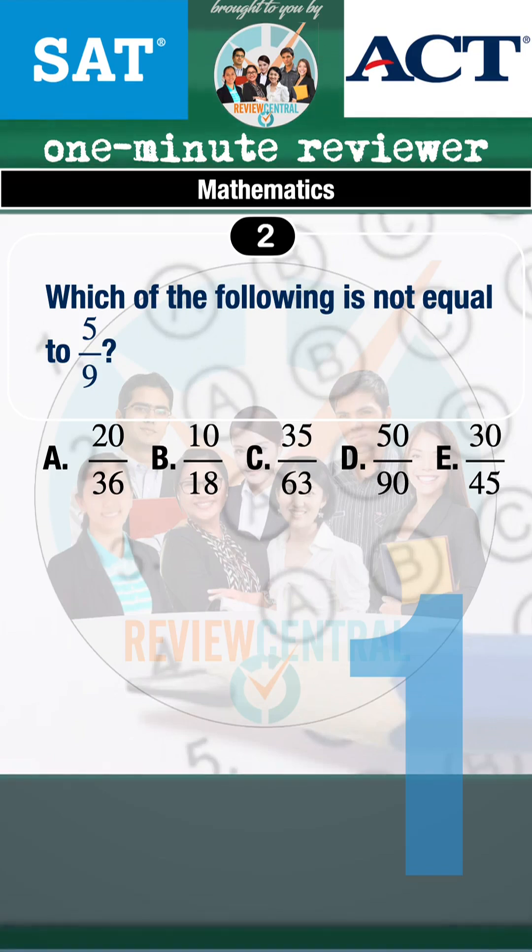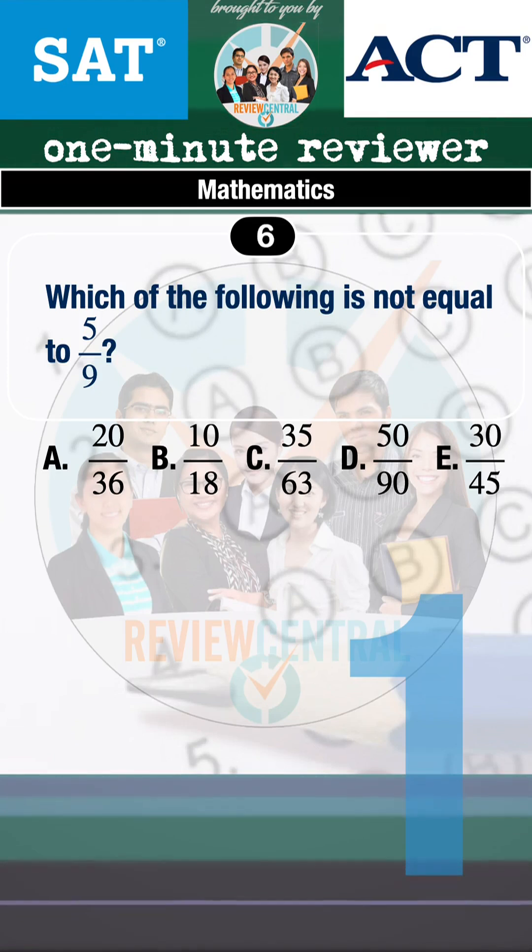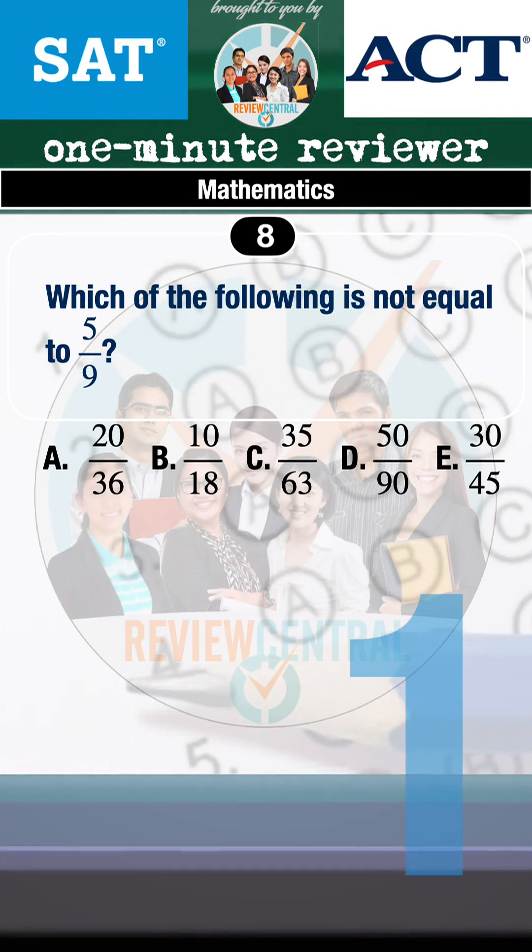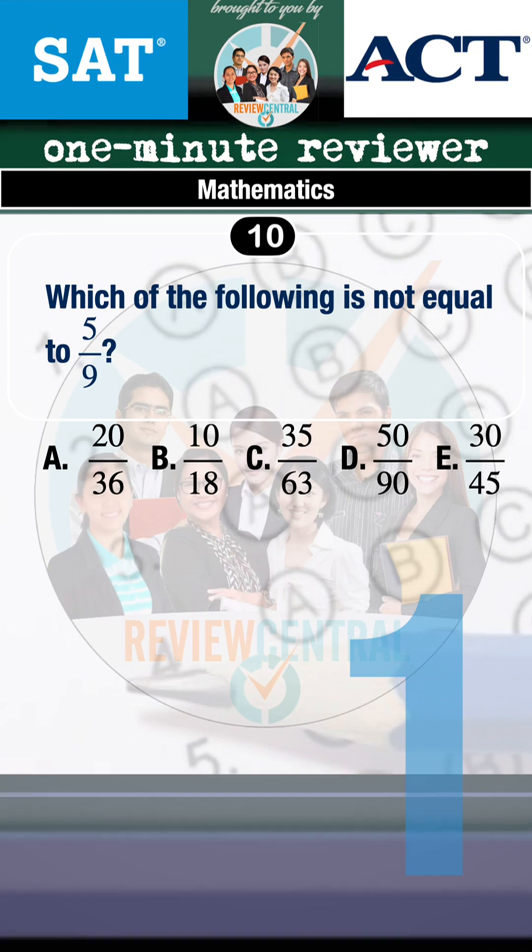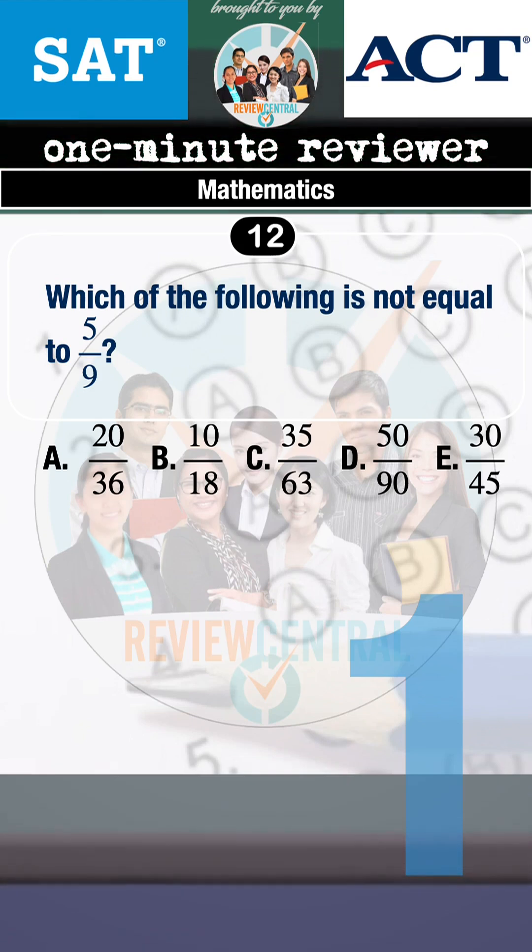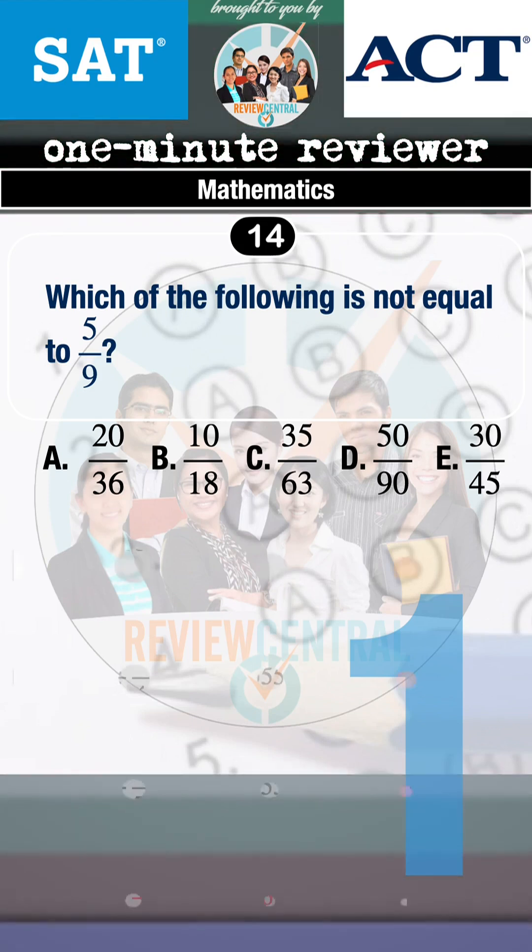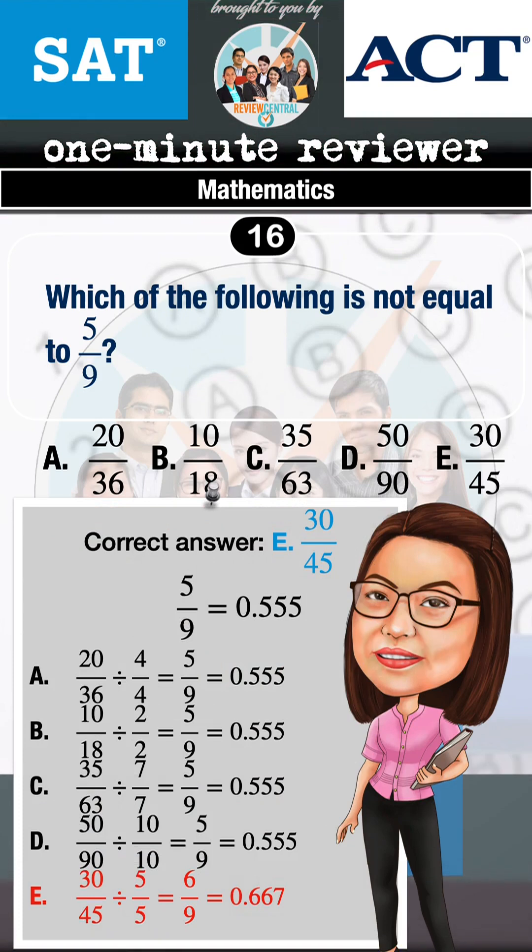Which of the following is not equal to 5/9? A: 20/36, B: 10/18, C: 35/63, D: 50/90, E: 30/45. The correct answer is E, 30/45.